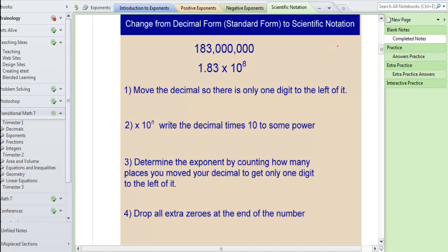So the basic steps for changing a number from its standard or decimal form into scientific notation are as follows. The first thing you want to do is move the decimal so there is only one digit to the left of it.